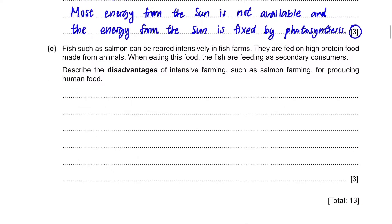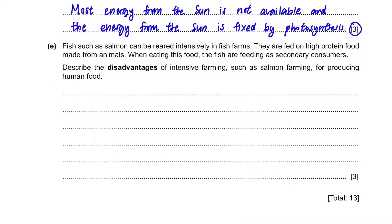Part E: fish such as salmon can be reared intensively in fish farms, fed on high-protein food made from animals, and when eating this food the fish are feeding as secondary consumers. Describe the disadvantages of intensive farming such as salmon farming for producing human food. Firstly, the high-protein food made from animals is much more expensive than food from nature, which is what fish normally eat. So the first point is that feed is expensive.